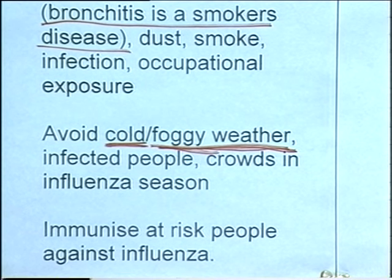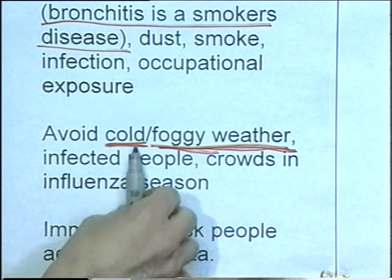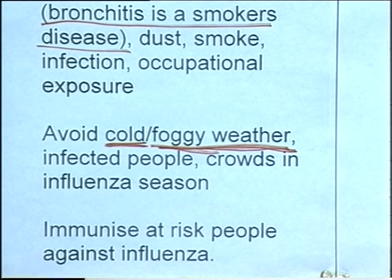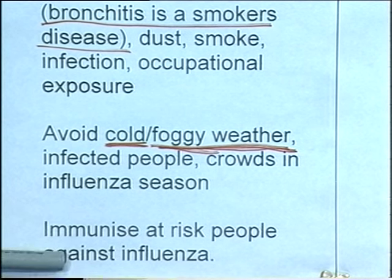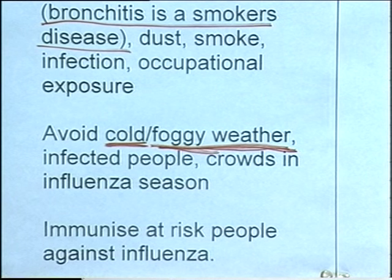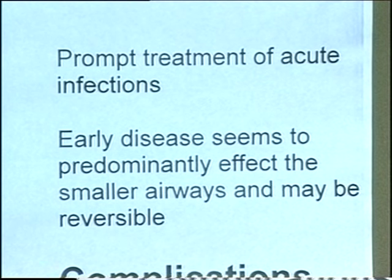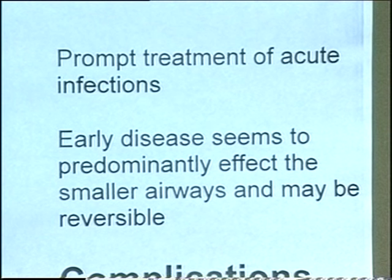Chest infections often occur after viral infections, and exacerbations of chronic bronchitis and emphysema often occur after viral infections. This is why we often immunize people with chronic bronchitis against influenza before the influenza season starts - if we can avoid an attack of influenza, hopefully we can avoid an exacerbation of chronic bronchitis with secondary bacterial infection. When infections are identified, they should be treated promptly with antibiotics to prevent them becoming established and to reduce the inflammatory effect on the bronchial tree.